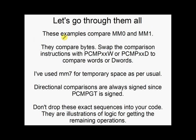Let's go through them all anyway. Okay. So in the following examples, I'm always comparing MM0 and MM1. And I'm always comparing bytes. But you can obviously swap the B on the end of the packed compare instructions for a W or a D, if you happen to be comparing words or dwords. I've used MM7 for a temporary space, as usual. And directional comparisons are always signed. So that's the GT comparisons. They're always signed. And that actually results in all of the directional comparisons being signed. So less than, less than or equal to, they're always signed. Oh, and the other thing is, yeah, just be careful. So if you just take exactly this code and drop it into yours, it probably won't be that quick. It might be. I don't know. But this is just an example of the logic of how to make the remaining comparison operators.